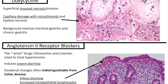Next up we've got doxycycline, which is in the tetracycline class. Elsewhere in the body it's associated with dark pigmentation in the teeth and other areas. But in the GI tract it can cause superficial mucosal necrosis and erosion, capillary damage with microthrombi and hyaline necrosis, and a background reactive chemical gastritis and chronic gastritis.